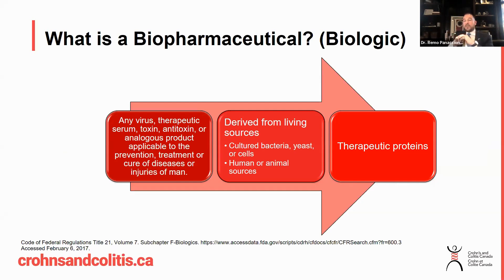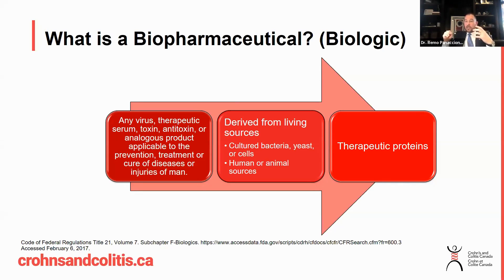Once you've done that, you can target that specific molecule instead of targeting something broadly. To do that, you need to develop what we call an antibody. An antibody is another protein — it's not a simple chemical with a recipe to it. It's a complex structure, and because of that, biologics are produced in living systems.